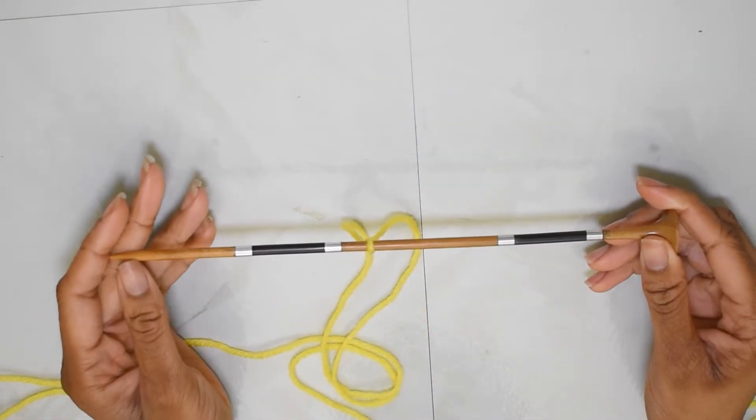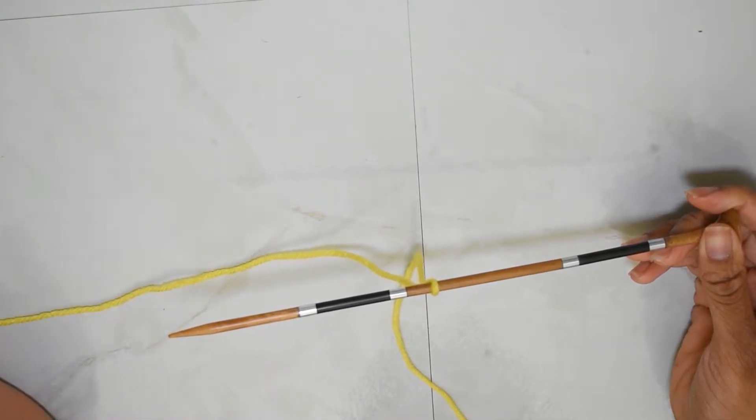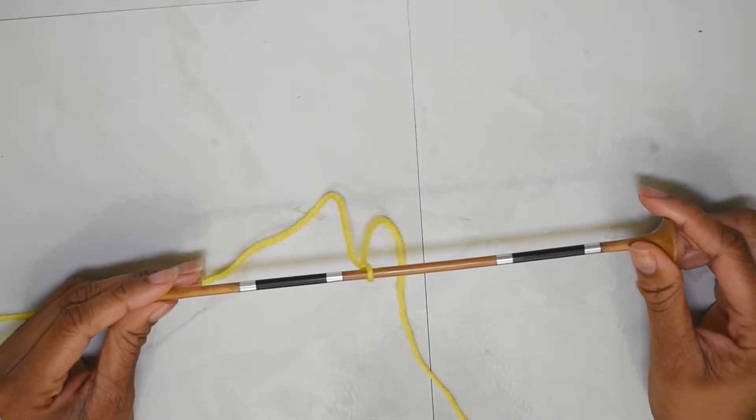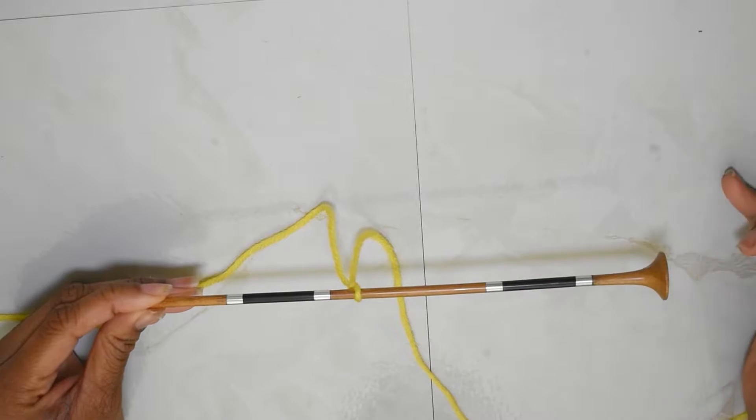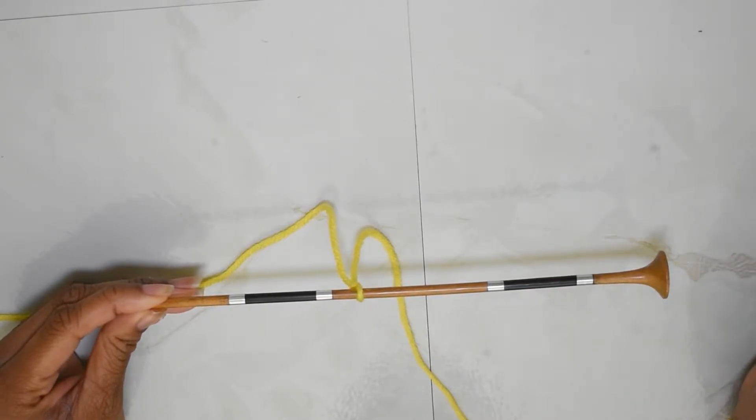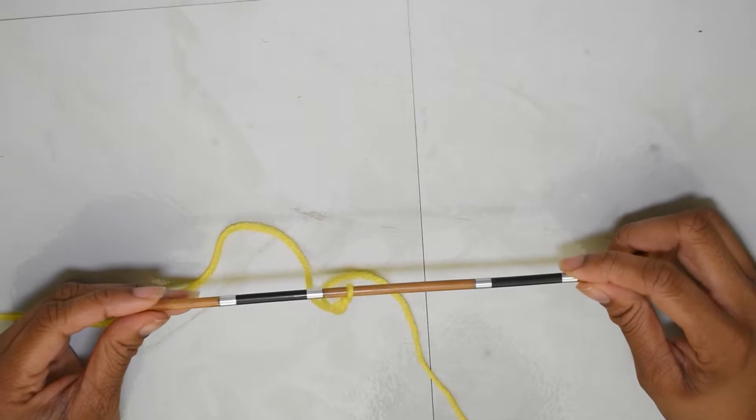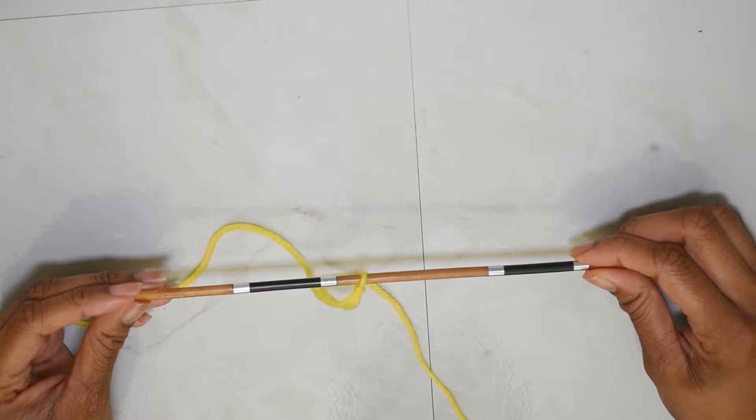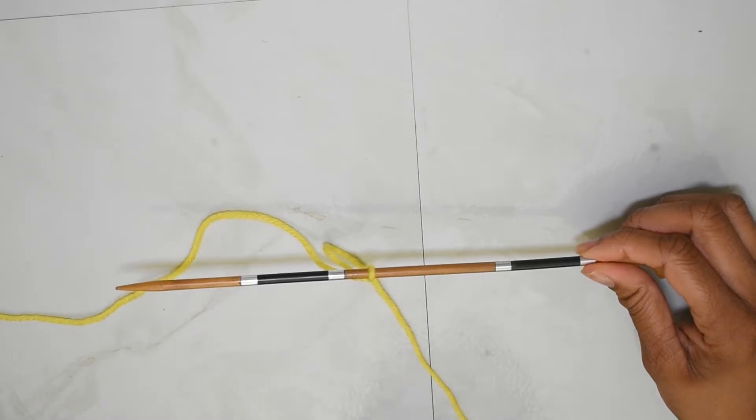Alright so we're going to cast on and we're going to be using my beloved long tail cast on method. Yay! So you're going to cast on in increments of four and then you're going to add two at the end so you can have a selvage stitch at each side of your pattern. For the swatch that I did I cast on 16 and I added on two for selvage so that gave me 18 stitches. You however are going to be casting on however many you need for your project. I'm not going to bore you with the basics of casting on. If you need help with that I do have a tutorial back on my channel that goes over beginner knitting processes. So I'm going to cast on and I'll meet you back when I'm ready to start the pattern.